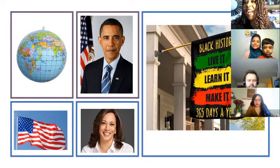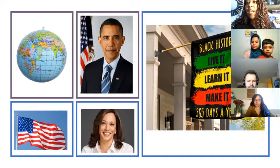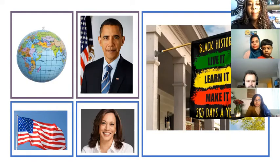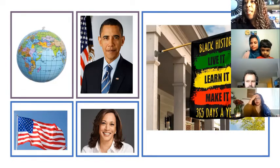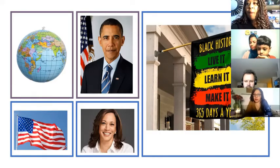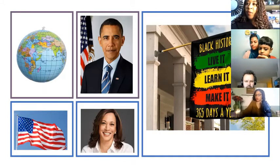Countries that hold Black History Month at different times of year include Belgium and Australia. Black History Month in Belgium is celebrated in March, established in Antwerp in 2017 by members of the African Youth Organization by Amina Nada Dunal and Mohammed Berry. In Australia, Black History Month is celebrated in July.